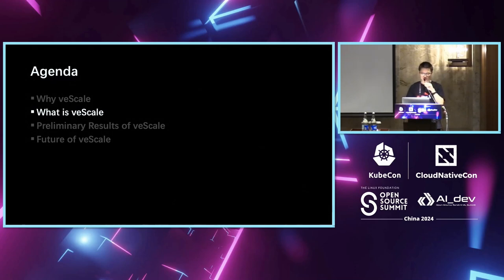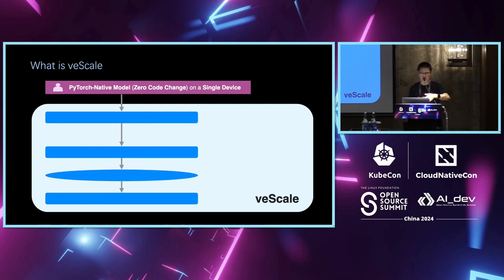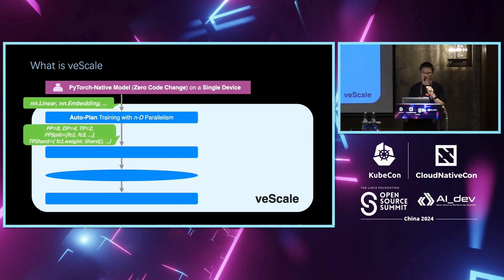Now I'll talk about how V-Scale works. It takes model code written in a PyTorch-native way — no need to change your model code; it can execute on a single device if memory allows. V-Scale generates a parallelization plan based on your model's neural architecture and the hardware environment. This plan contains details about different parallelization dimensions such as PP size, DP size, TP size, how to split PP stages, and how to shard weights for TP.